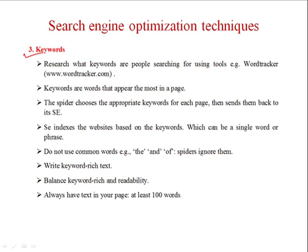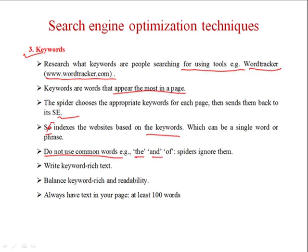The third important thing is keyword research — find out what keywords people are searching for using tools such as WordTracker at www.wordtracker.com. Keywords are the words that appear most in pages; the spider chooses the appropriate keyword for each page and sends them back to the search engine, which indexes the websites based on those keywords. Keywords can be a single word or a phrase. Do not use common words — highly frequent stop words are generally ignored by web crawlers. Use the right type of keywords and keyword-rich text, balance keyword richness with readability, and always have at least 100 words of text on your page.